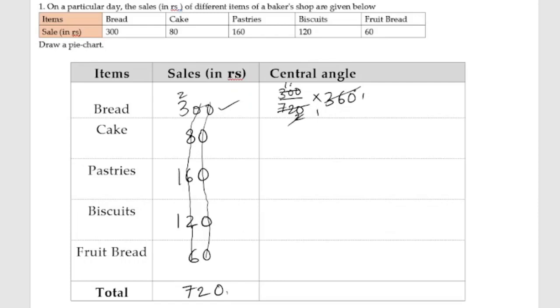360 ones are 360, 720 twos are 720, so two ones are two. One fifty times two is 300, so we will get 150 degrees. Next is 80 by 720 into 360. Again, 360 ones are 360, twos are 720, so two ones are two. Eight times ten is eighty, so we will get 40 degrees.